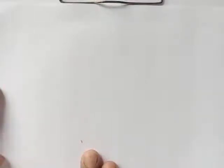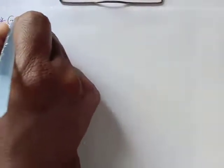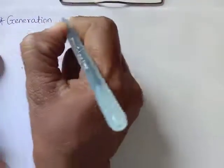Hello students. In the previous video we have seen how to generate points on a circle, either centered at the origin or where the center is somewhere else. We have seen those with examples. Now in this video let's see the generation of an ellipse, or the generation of points on an ellipse.